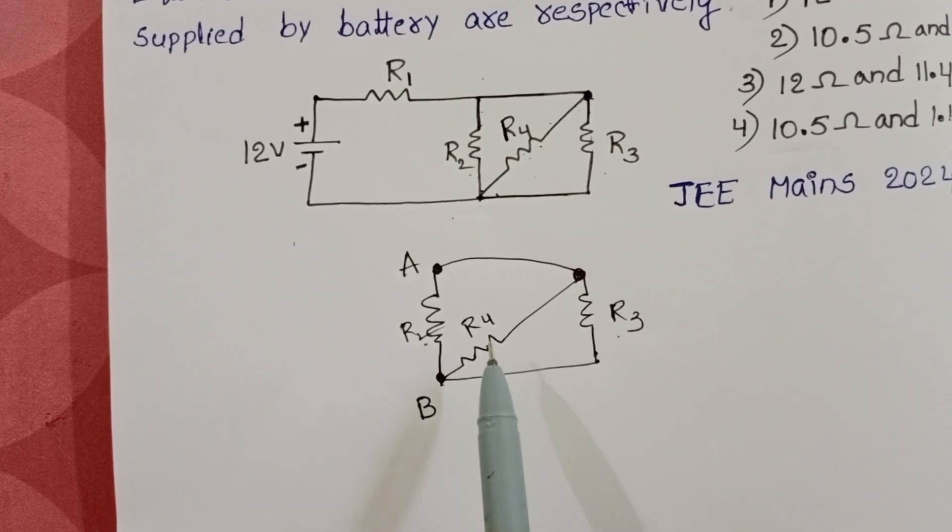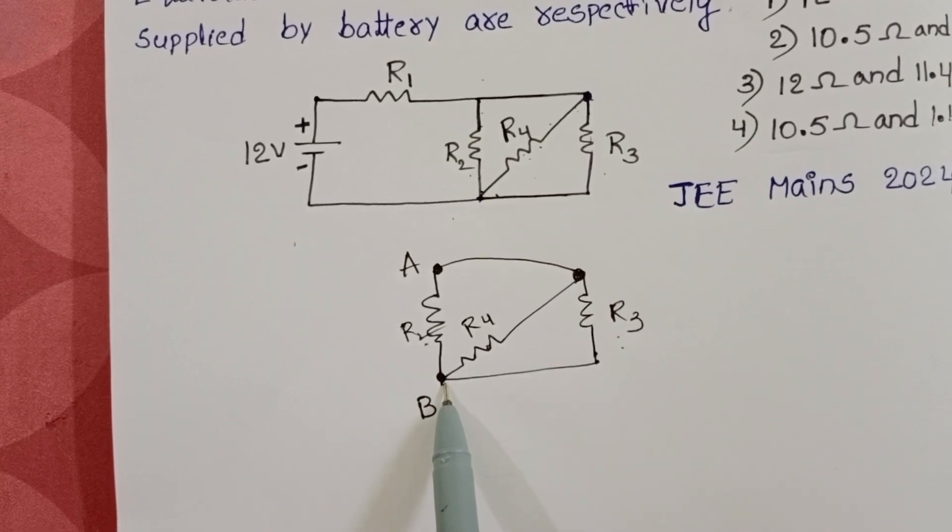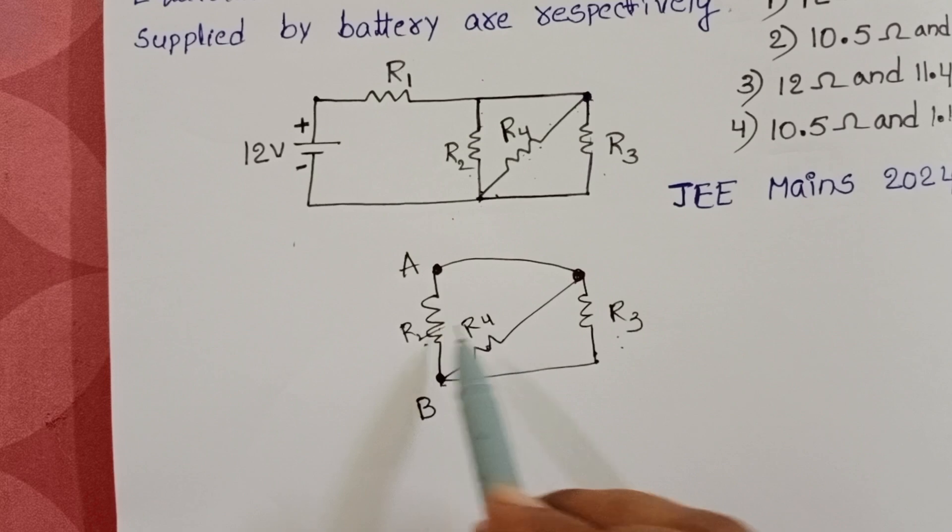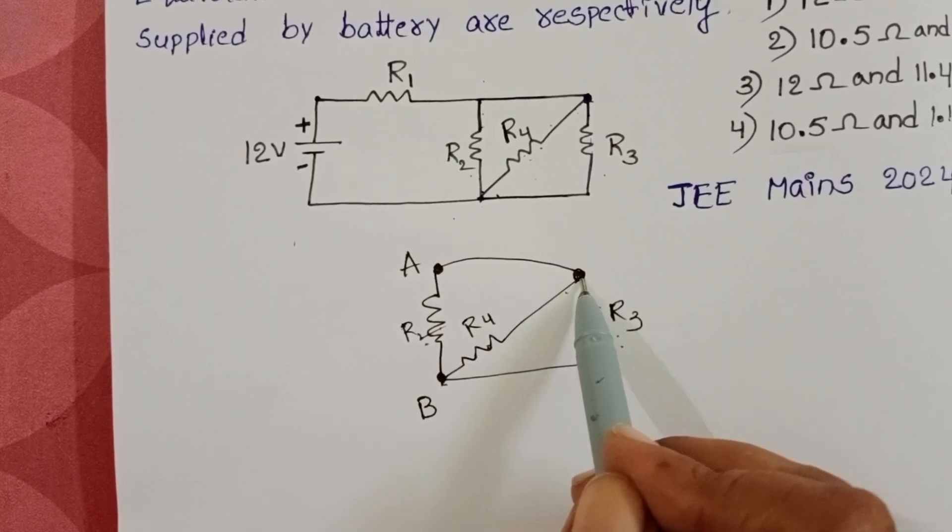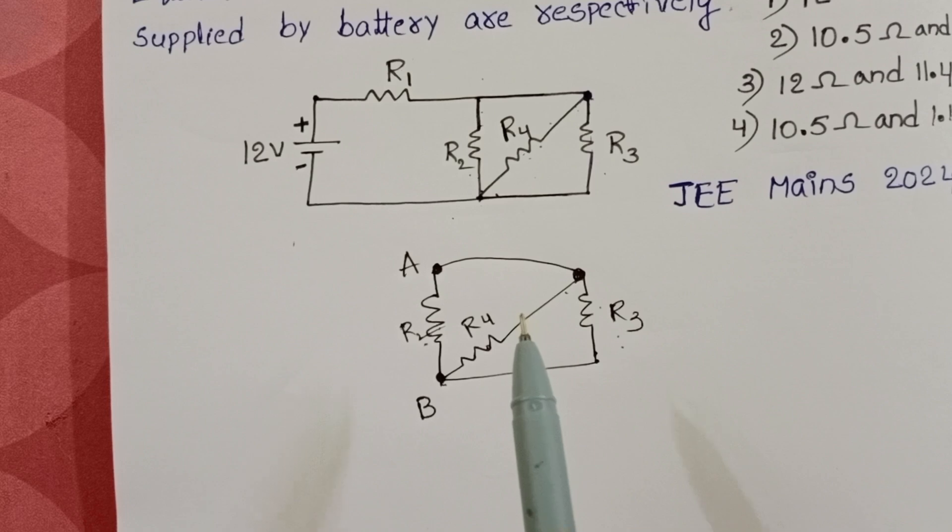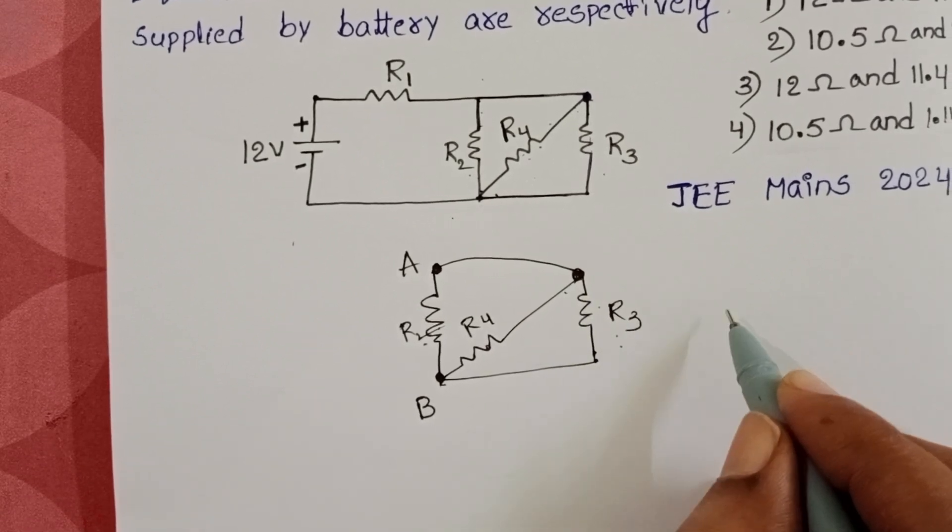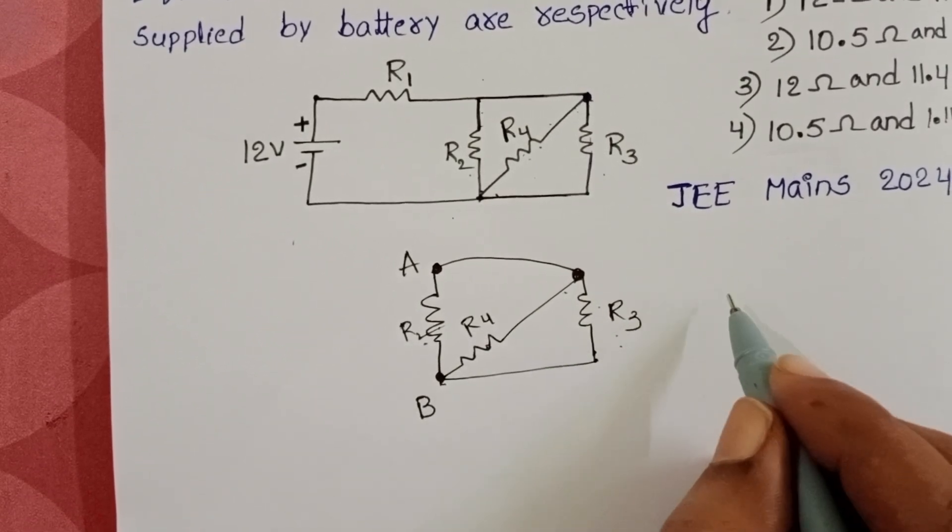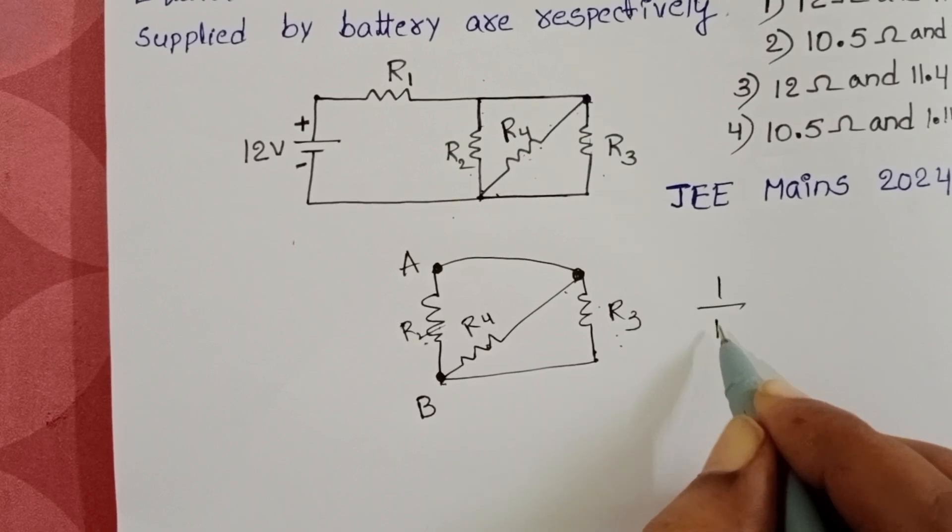One end of R2, R4, and R3 is connected to B, and another end of R2, R3, and R4 is connected to A. So these three resistors are in parallel connection. First, find out the equivalent resistance of these three resistors connected in parallel.